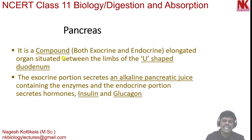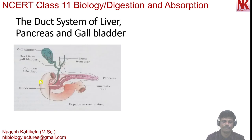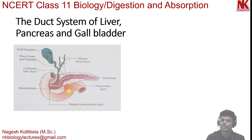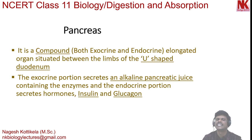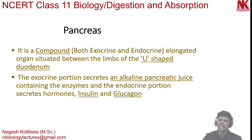The pancreas is situated between the limbs of the U-shaped duodenum, as you can see in the diagram — this is the U-shaped duodenum, and the pancreas is located between its two limbs. The more details of pancreatic juice enzymes, bile juice components, saliva enzymes and their functions will be discussed in the next session.